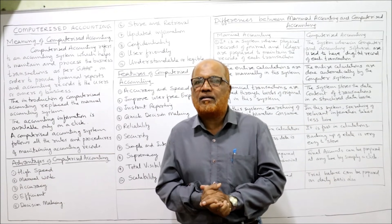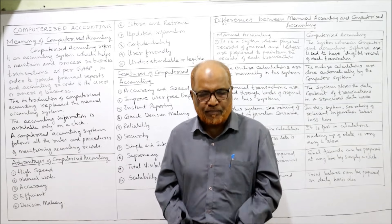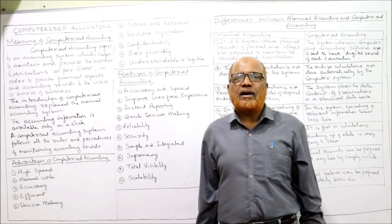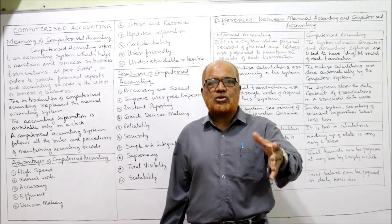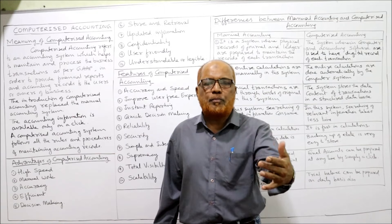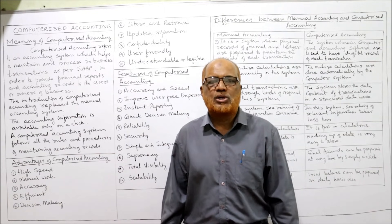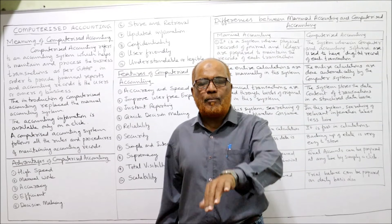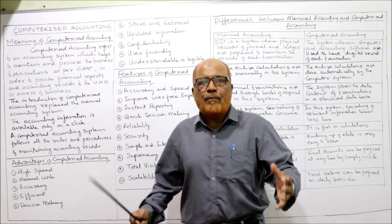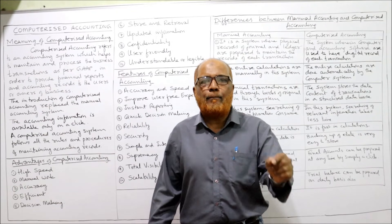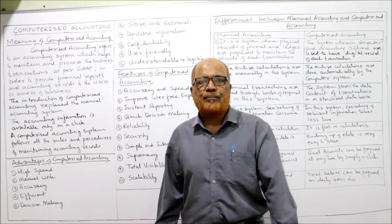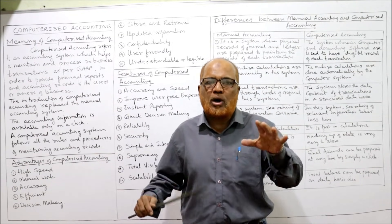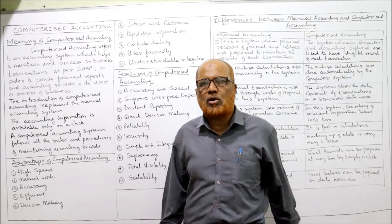Now, computerized accounting — accounting is already known as the science and art of recording business transactions in order to prepare financial reports and financial statements. There are two types of accounting: manual accounting and computerized accounting. Manual accounting means when accounts are maintained manually on paper, in registers — all accounts are maintained and processed on paper records.